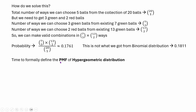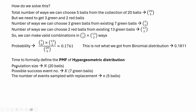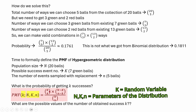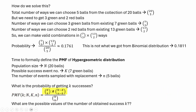Let's formally define the PMF of hypergeometric distribution. We have a population size N (20 balls), possible success events K (7 green balls), and number of events sampled n (5 balls). The question is what is the probability of getting k successes. k is the random variable and N, K, and n are the parameters. You can compare this PMF with the formula derived above and see the similarity. I showed you the derivation first rather than just the formula to make it more intuitive.